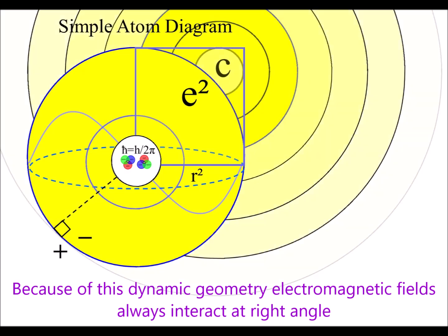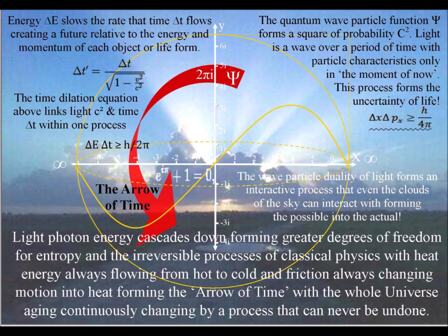Of the sphere. Such a process will naturally form three-dimensional space with one variable in the form of time. Light photon energy cascades down from the sun forming greater degrees of freedom for entropy or disorganization.